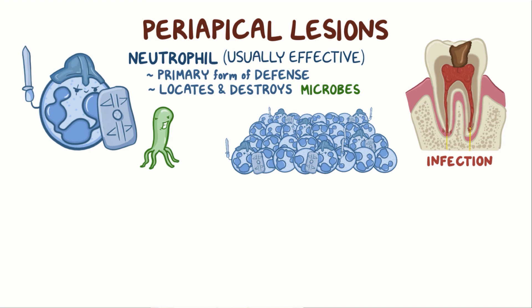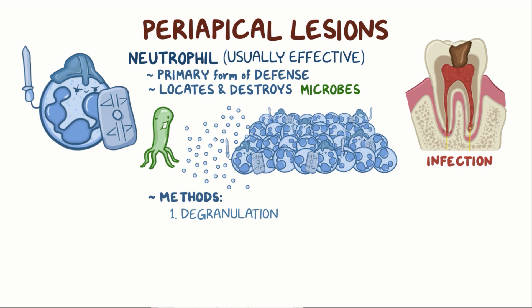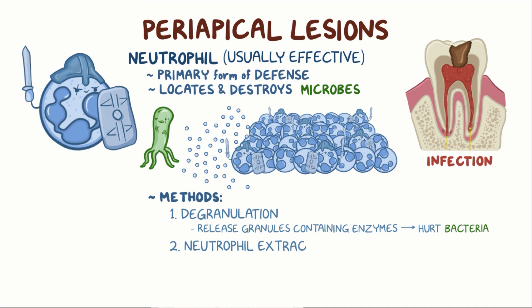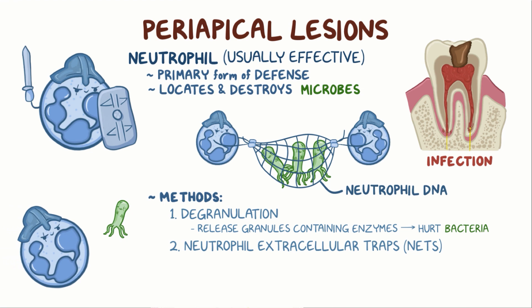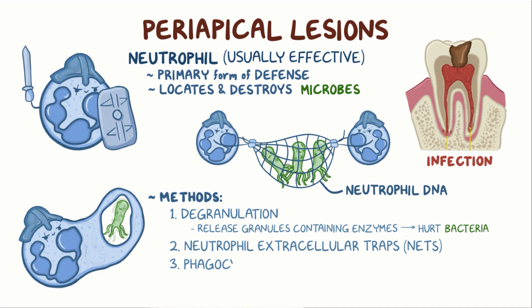They achieve this through three methods. First is degranulation, where neutrophils release a bunch of granules containing various enzymes that hurt the bacteria. Then they'll use neutrophil extracellular traps, or NETs, to immobilize the wounded bacteria. These are actually nets made out of neutrophil DNA. Finally, neutrophils will then gobble up the bacteria through phagocytosis as a final means of destruction.